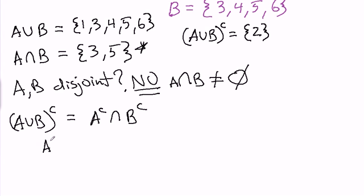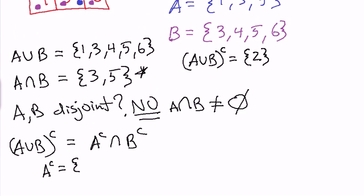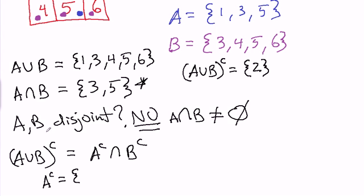So A complement is equal to just 2, right? Sorry, no. Where's A? Let's scroll up and see what A is again. A is all odd numbers. So A complement is going to be all even numbers. And B complement is going to be all outcomes that are not in B. So that's 1 and 2.